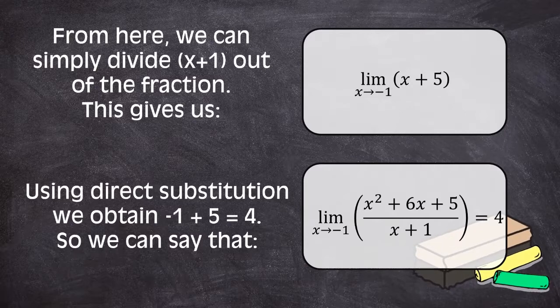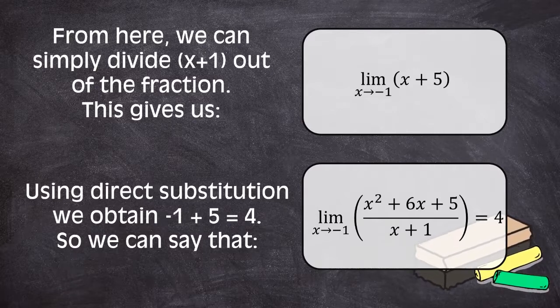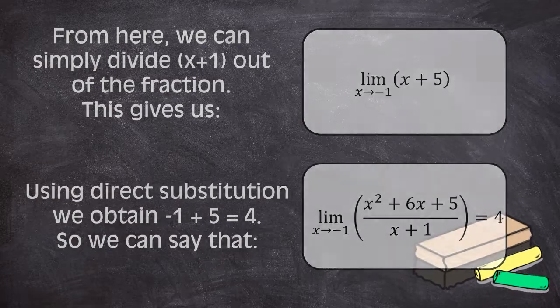We then can say that the limit of the quantity of x squared plus 6x plus 5, all over x plus 1, as x approaches negative 1, is equal to 4.